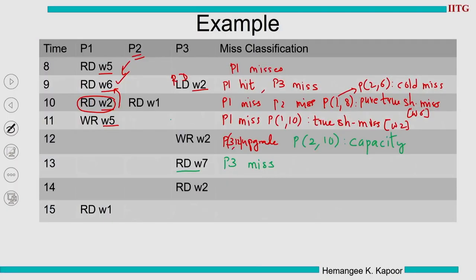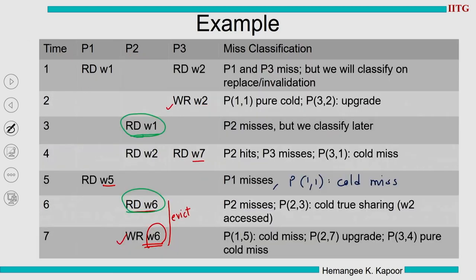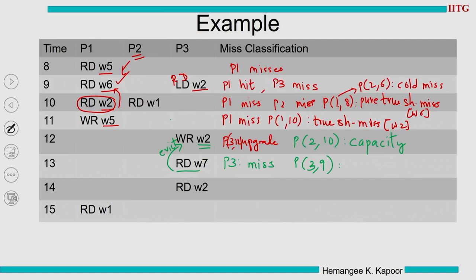Row 13: P3 incurs a cache miss and evicts P2's block. I need to give a reason for the block P2 brought — that block with W2 was loaded in row 9. For P3,9: we read W2, but only P3 changed W2 and nobody else changed it. So this is a capacity miss, not a coherence miss.